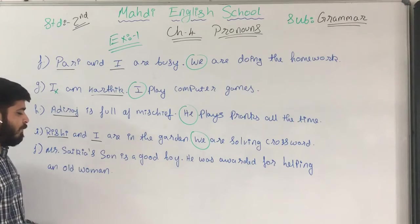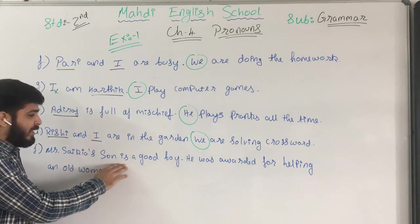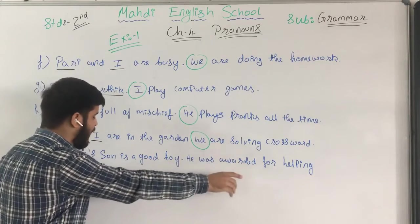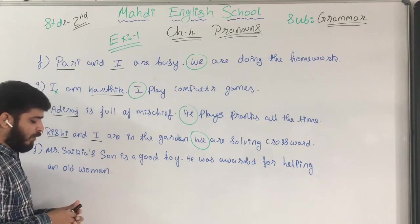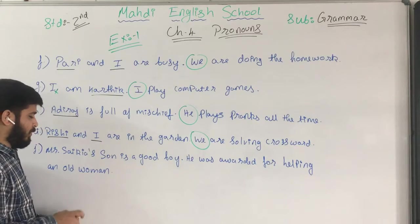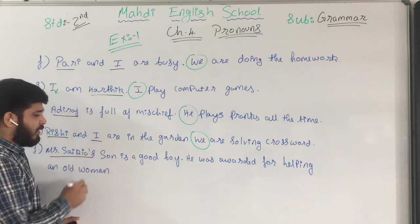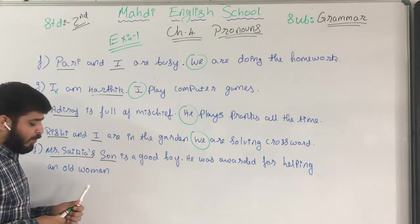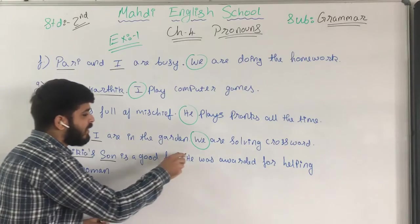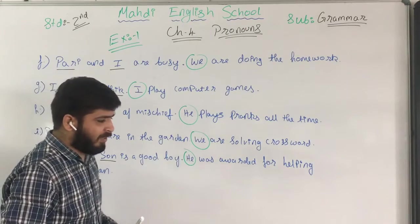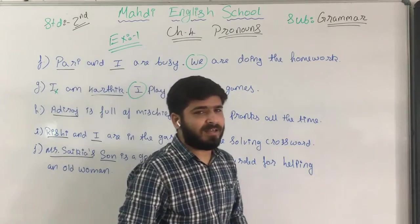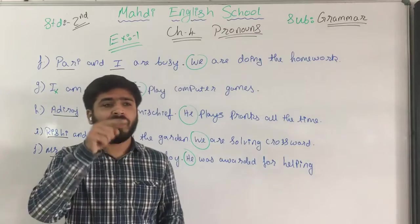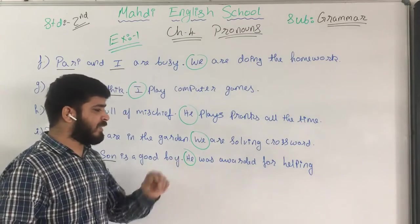Now the last question: 'Mr. Saika's son is a good boy. He was awarded for helping an old woman.' Mr. Saika is the noun and his son is also the noun. The pronoun is 'he' — instead of using Mr. Saika's son's name, 'he' is written to refer to his son. So 'he' is the pronoun.